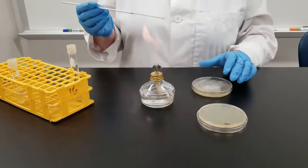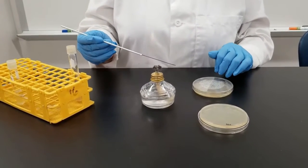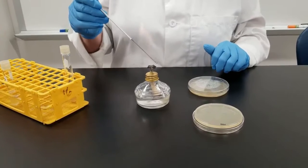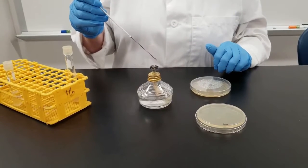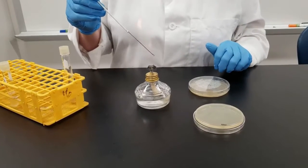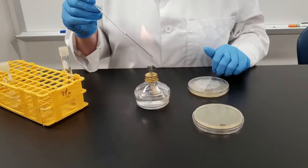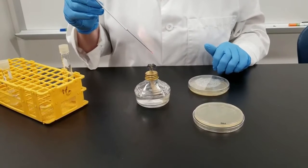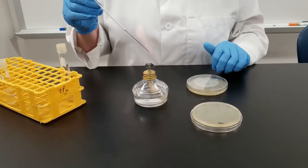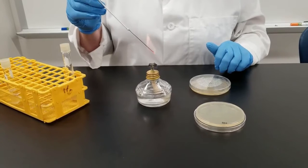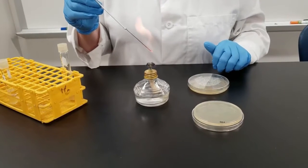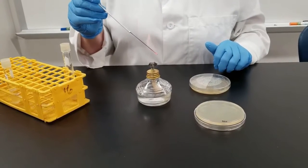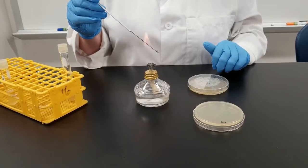What you need to do to start off with is take your inoculating loop. In this case, we are using the loop. You need to stick it into the flame. This is an incineration, a way of sterilizing that loop. You're literally burning everything off. You want to get it where it's glowing nice and red. That kills everything that has been on this loop.